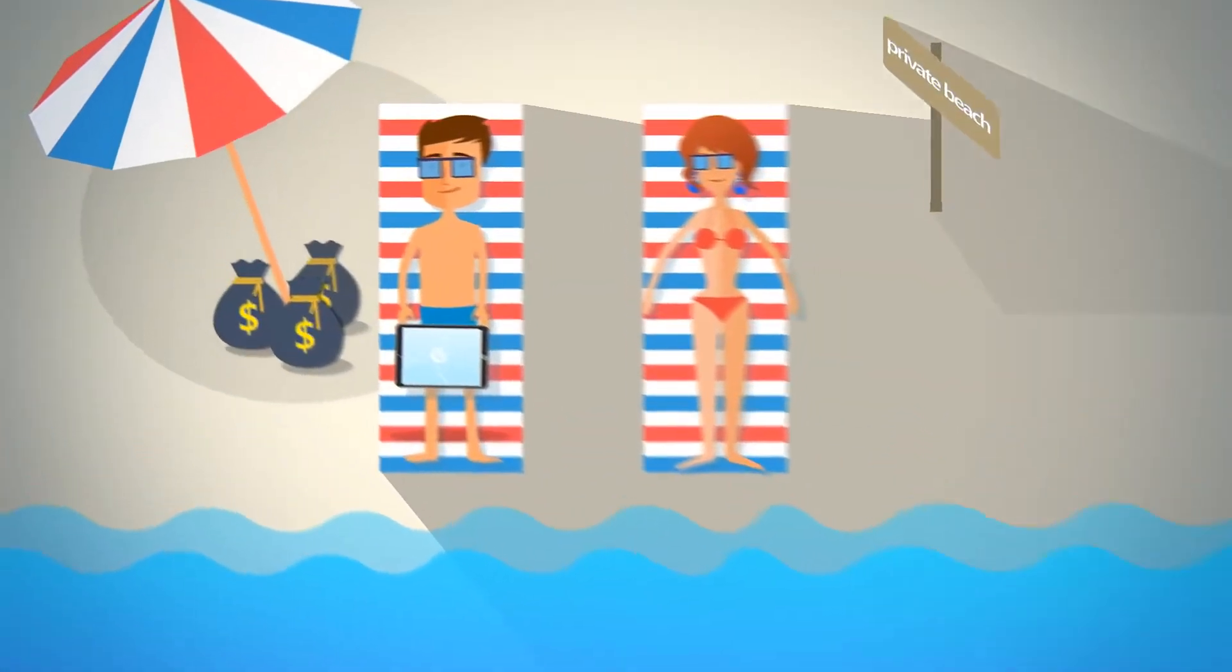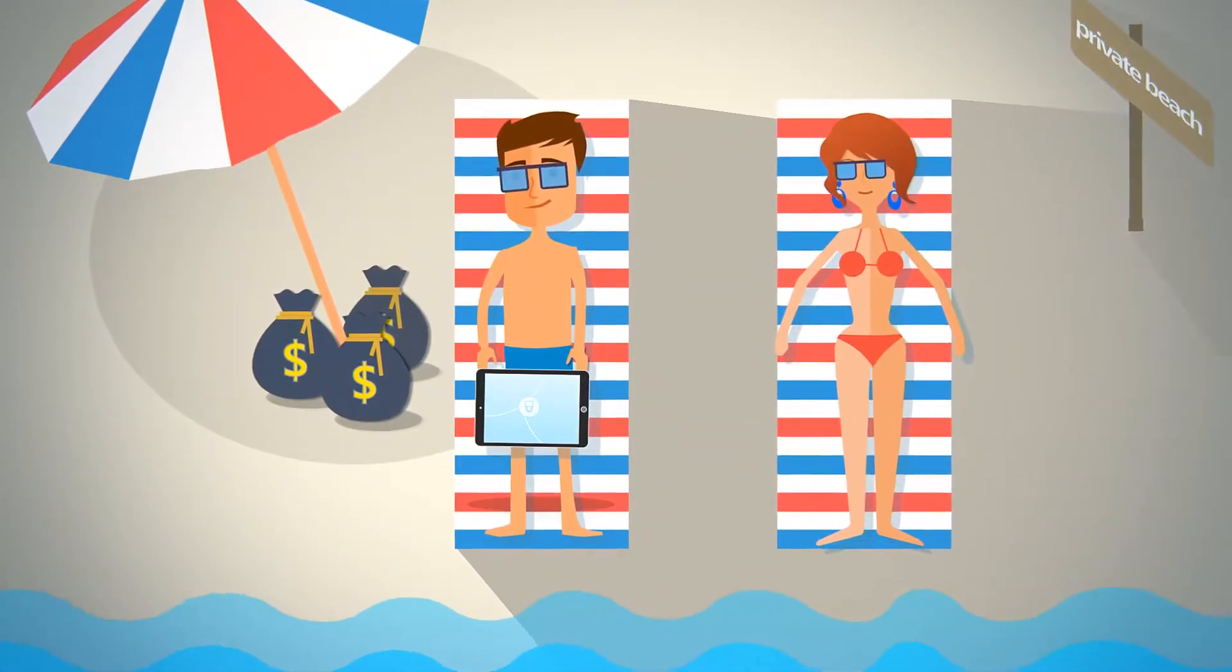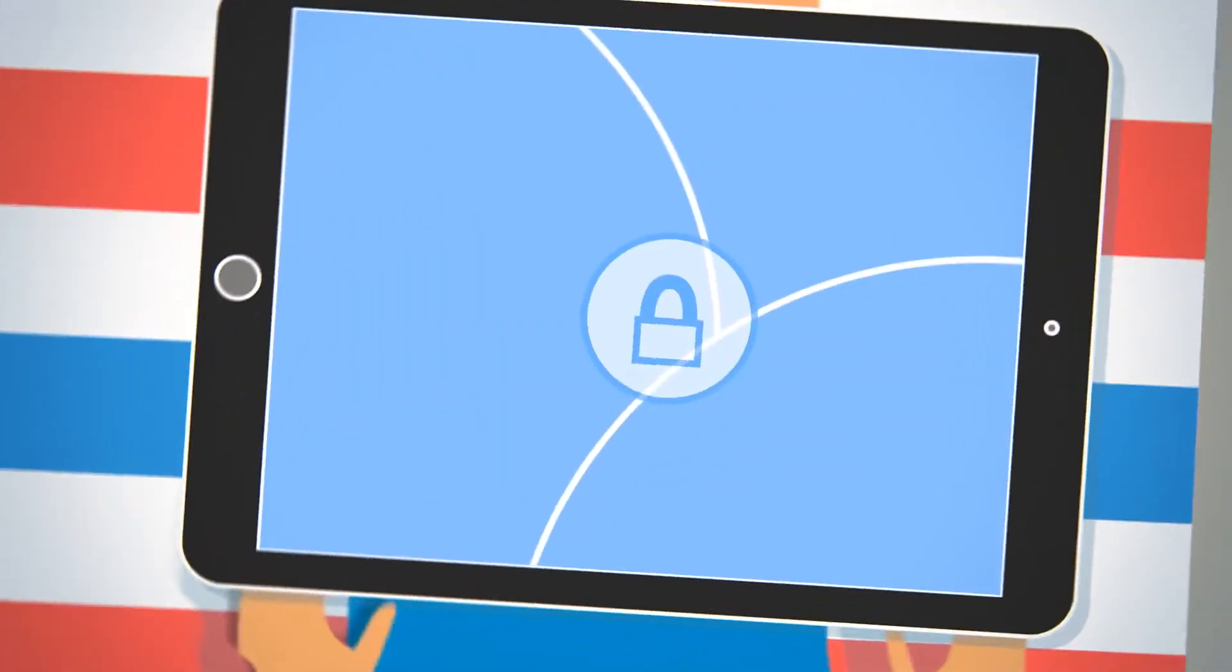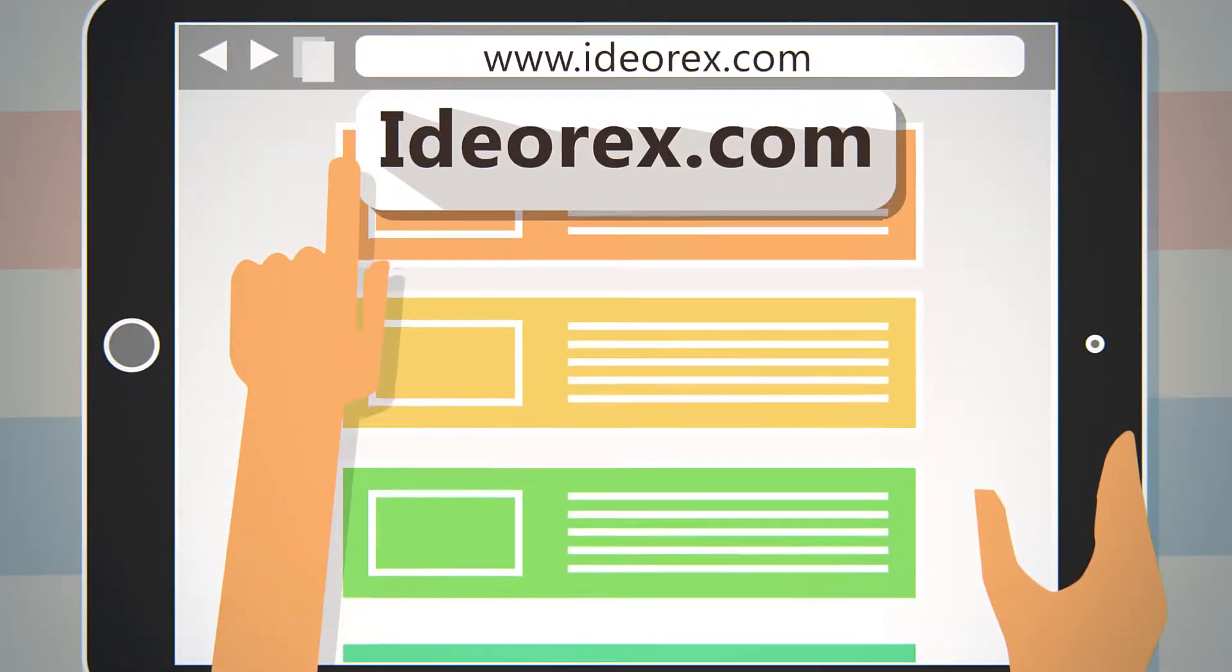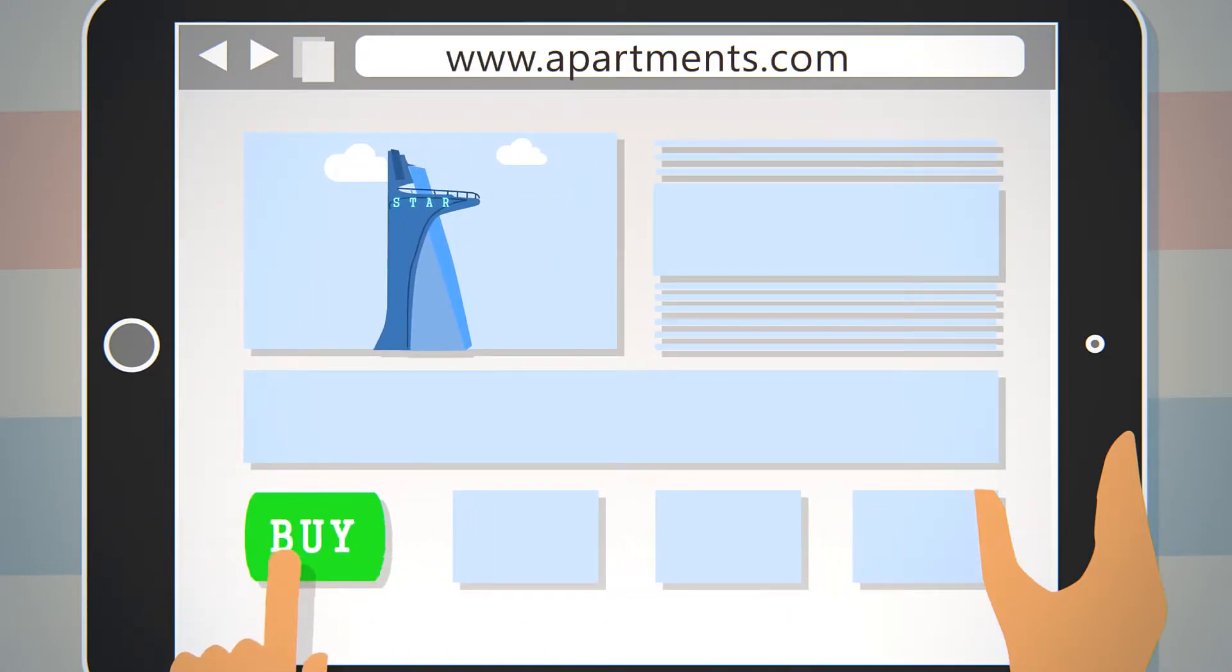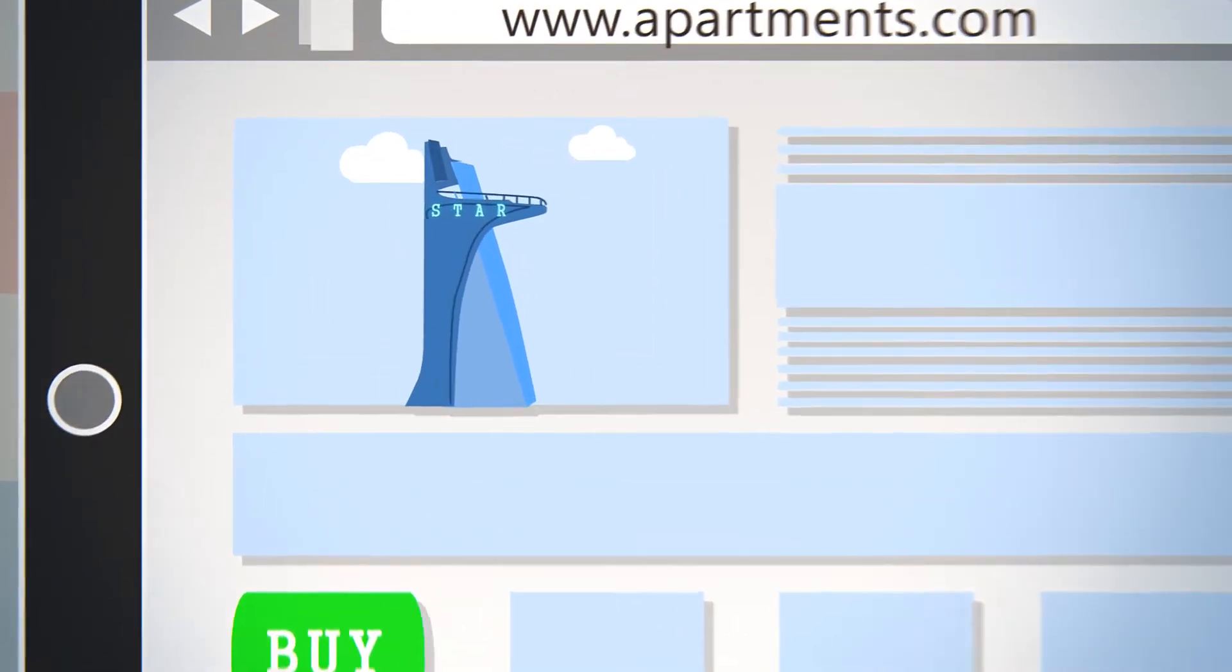These days, you enjoy laying on your private beach with that cute girl from econ, while your money bags keep the umbrella steady. You get back on ideorex.com and start buying the new ideas other people are uploading. You end up buying Stark Tower and living happily ever after.